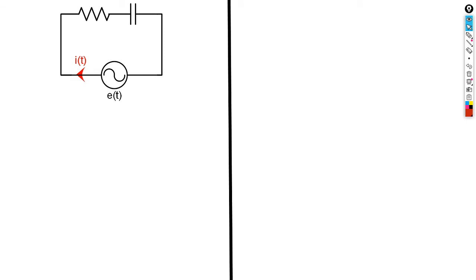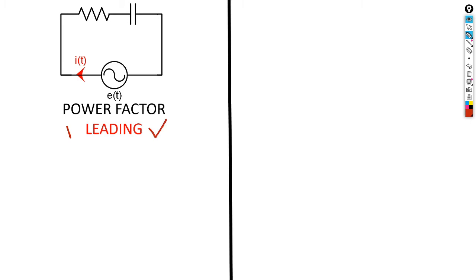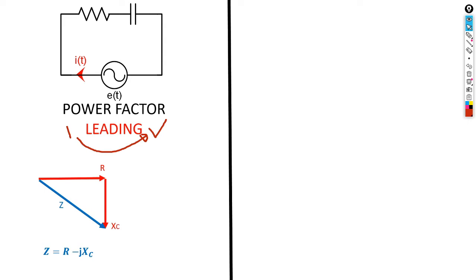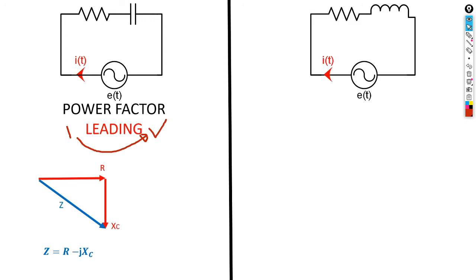For a capacitive load — a combination of a resistor and a capacitor — we expect a leading power factor. Leading means the current comes before the voltage. For an inductive load — a combination of a resistor and an inductor — the power factor is lagging, meaning the current comes behind the voltage. The pure resistor is at zero degrees, the pure inductor at 90, and the pure capacitor at minus 90.